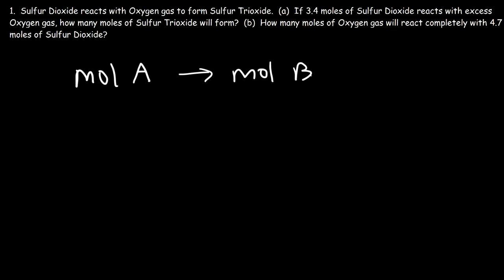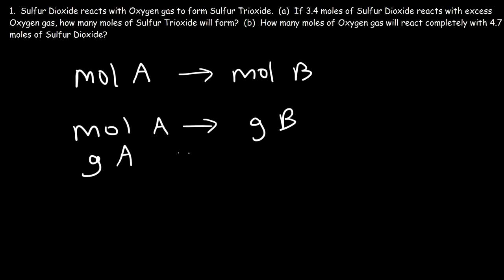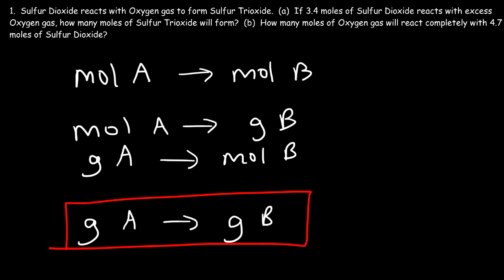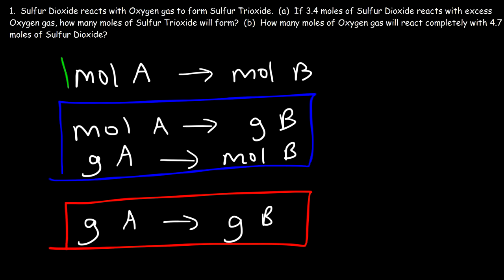Problem one will focus on that. The second type is to convert the moles of substance A to the grams of substance B, or you could be given the grams of substance A and need to convert it to the moles of substance B. The third type is if you're given the grams of substance A and need to convert it to the grams of substance B. This involves three steps, the second type involves two steps, and the first is a single step.